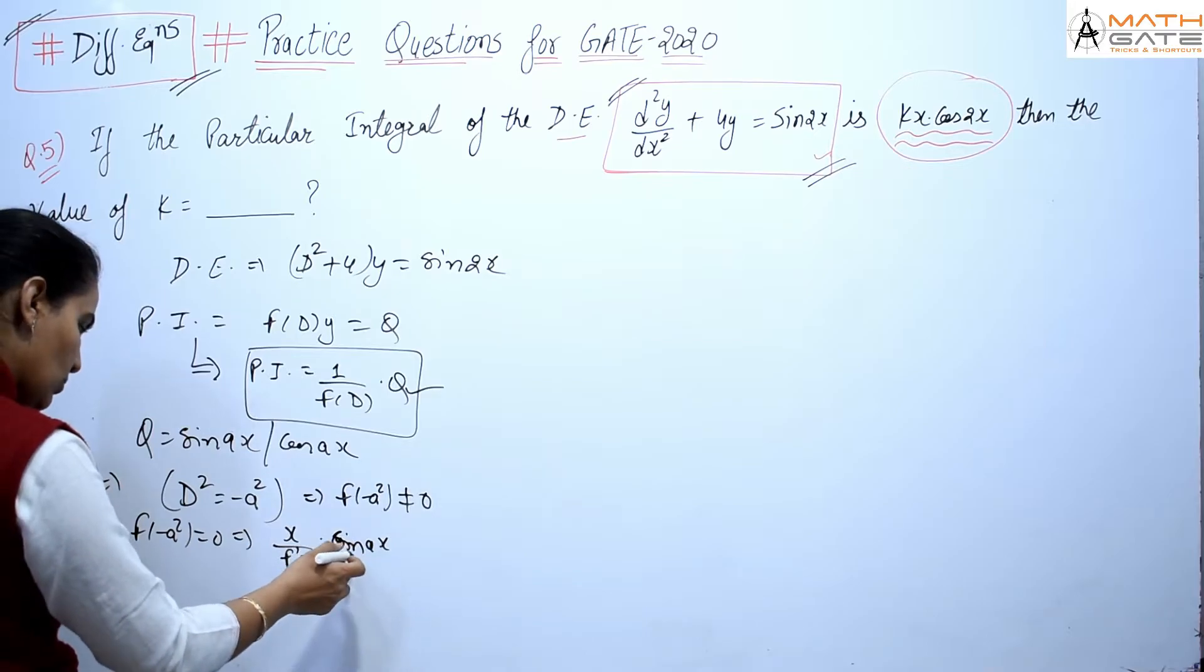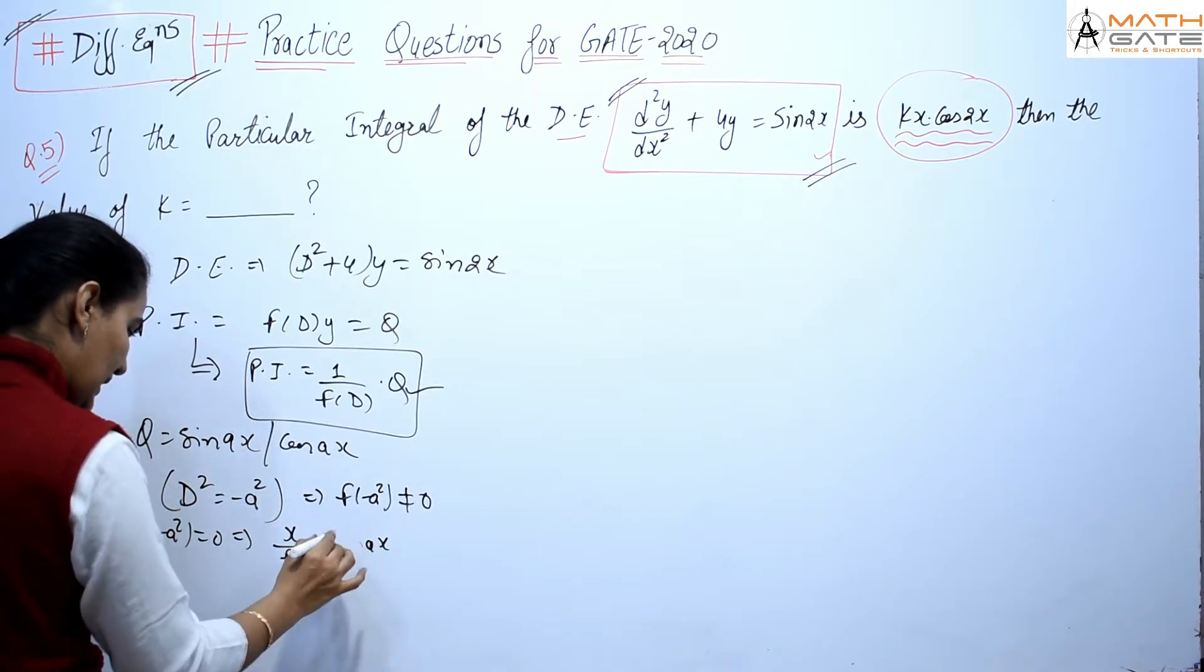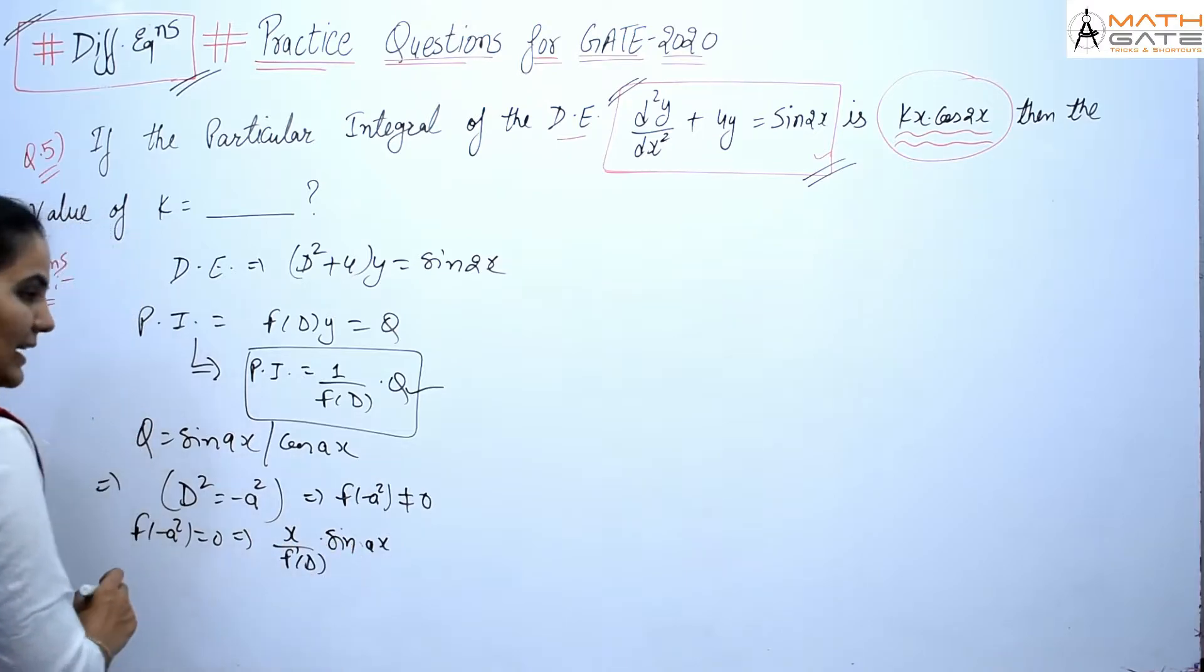Okay, so here it will be sin, cos. Now you have to keep your attention that it will be zero or not.